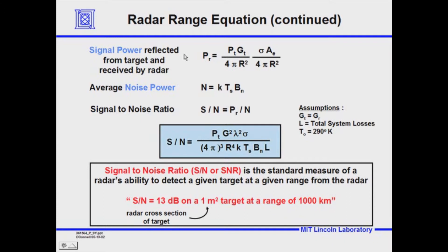Now we've got the signal power and the noise power, and the ratio of those two is the signal-to-noise ratio (SNR). We take these quantities, divide one by the other, and have the radar equation. The SNR is the standard measure of a radar's ability to detect a given target at a given range — for example, an SNR of 13 dB on a one square meter target at a range of a thousand kilometers is a statement of the detectability characteristics of that radar.